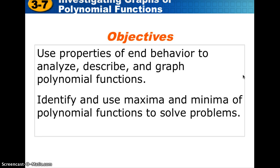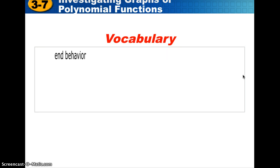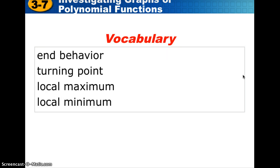Let's take a look at our objectives. We're going to use the properties of end behavior to analyze, describe, and graph polynomial functions, and identify and use maxima and minima of polynomial functions to solve problems. We have some new vocabulary in this section. End behavior is one of them — it's exactly what it sounds like. If you look to the left at the extreme end of the function, and to the right at the extreme end, what is it doing? Is it going up, increasing, or is it going down, decreasing?